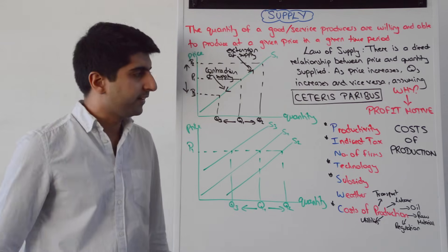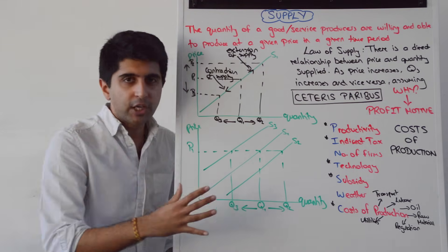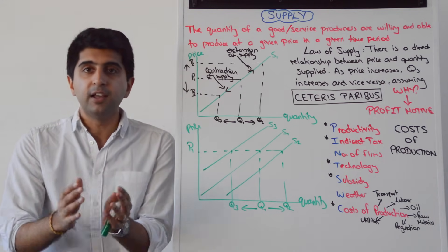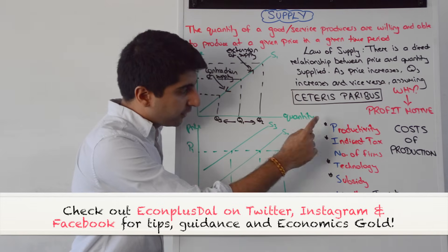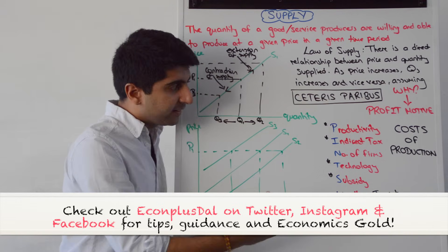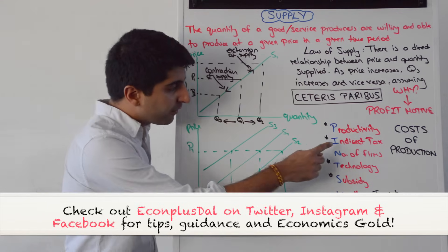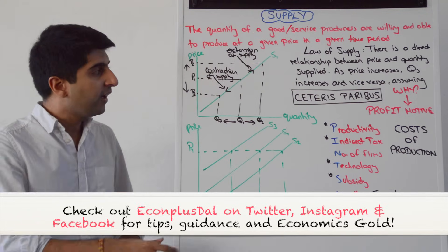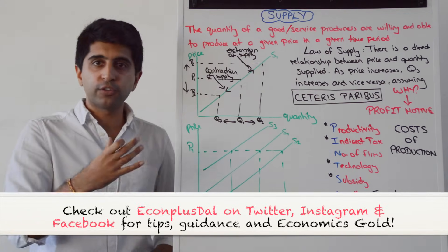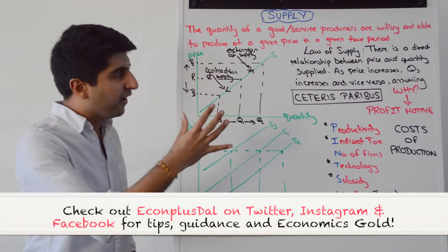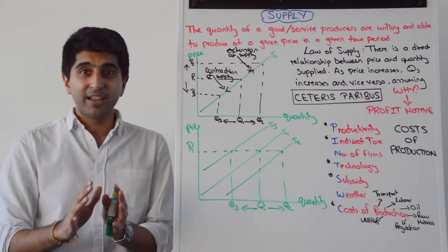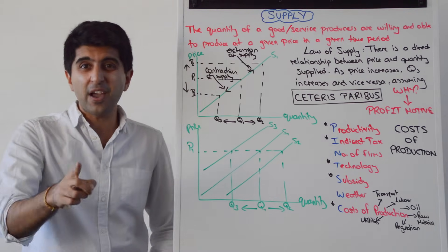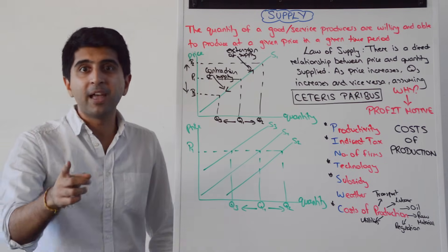So for non-price factors that affect supply and shift the supply curve, generalize and think costs of production, then remember PINTS WC. It's only number of firms and weather that don't directly affect costs of production. Non-price factors shift the curve; the price of the good or service itself changing means we move along the supply curve. That is supply and the supply curve covered fully. Thank you so much for watching — stay tuned for the very important next video where we look at equilibrium.